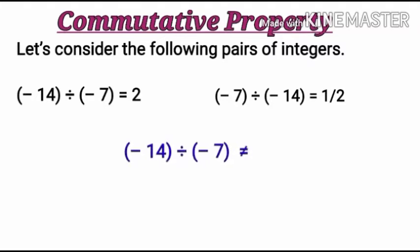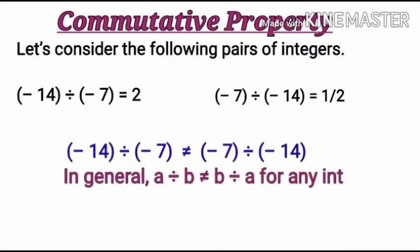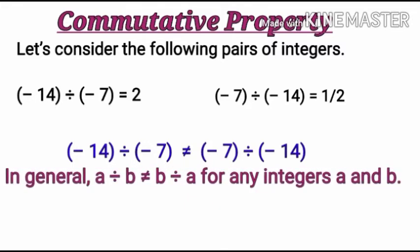So here it means -14 divided by -7 not equal to -7 divided by -14. Therefore, if we change the order of integers, then the result will not be equal. In general we can say a divided by b not equal to b divided by a for any integers a and b.